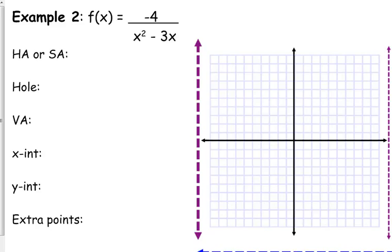All right, so horizontal or slant asymptote, what are we looking at here? Is it a slant? No. Horizontal, okay?